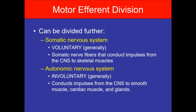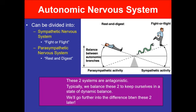The motor efferent division is divided into the somatic nervous system and the autonomic nervous system. The somatic nervous system is voluntary — somatic nerve fibers conduct impulses from the central nervous system to skeletal muscles. The autonomic nervous system is divided into sympathetic and parasympathetic types. It regulates internal organs and acts as an efferent pathway linking brain areas to effectors such as blood vessels, the heart, and the gut.